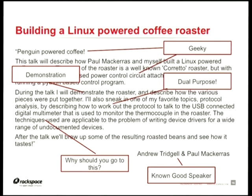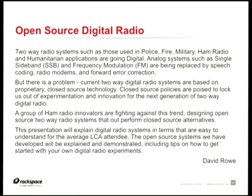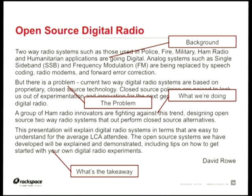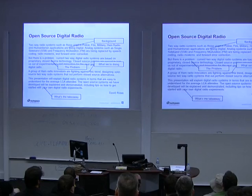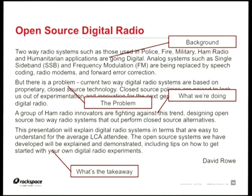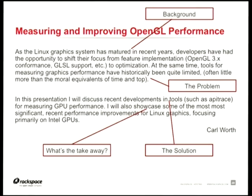The next example is David Rowe on open-source digital radio. In the first paragraph he gives background; in the next he clarifies the problem: 'Current two-way digital radio systems are based on proprietary, closed-source technology.' Then he says a group of ham radio innovators are fighting against this trend — emotive words that draw you in. The takeaway: 'The open-source systems we have developed will be explained and demonstrated, including tips on how to get started with your own digital radio experiments.'